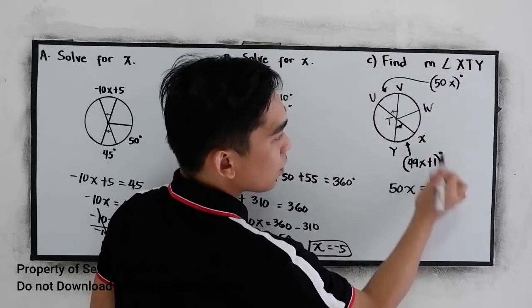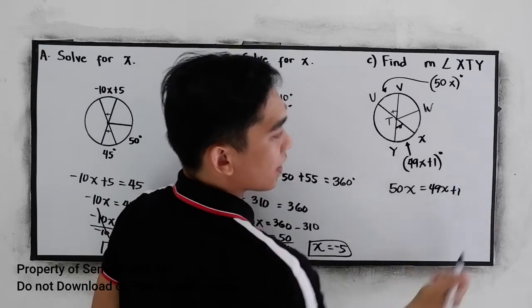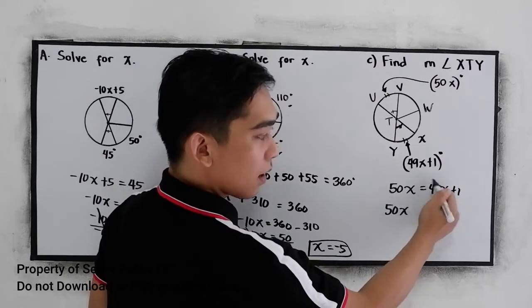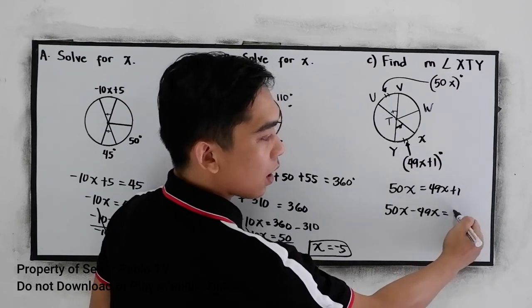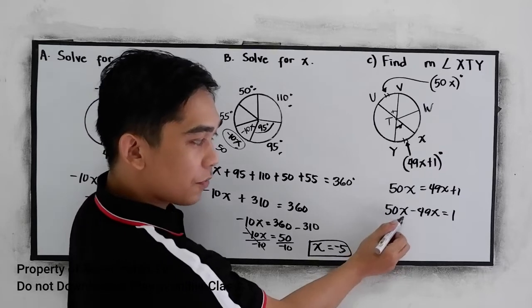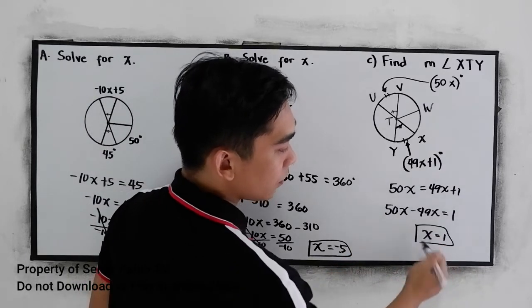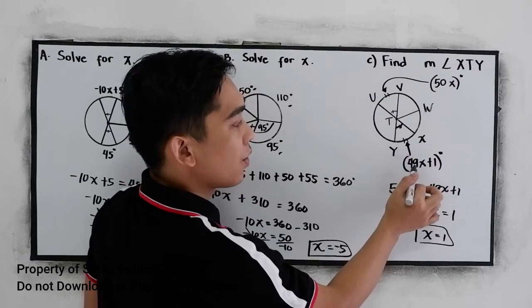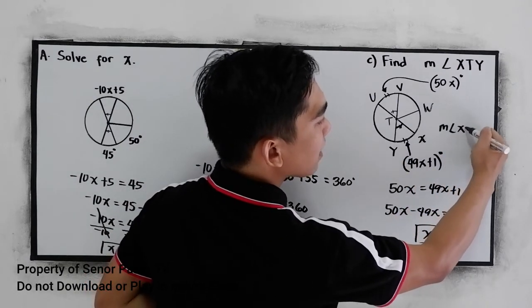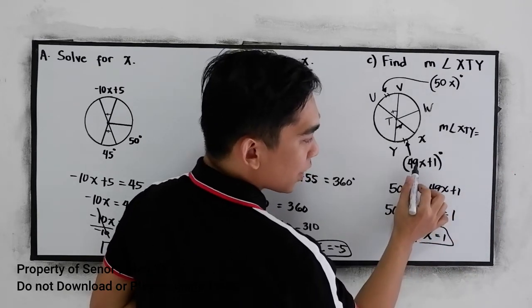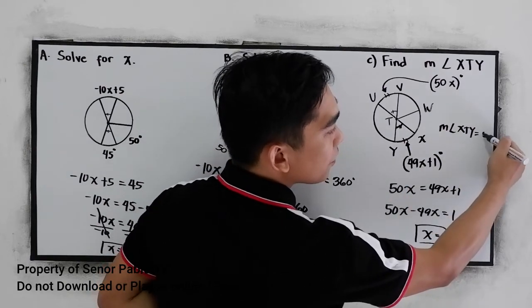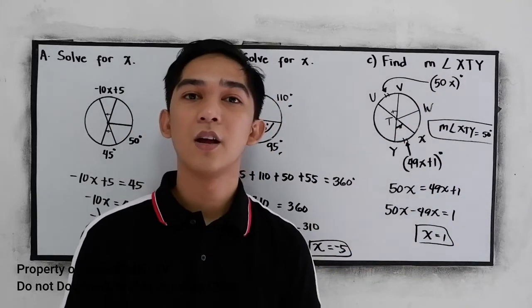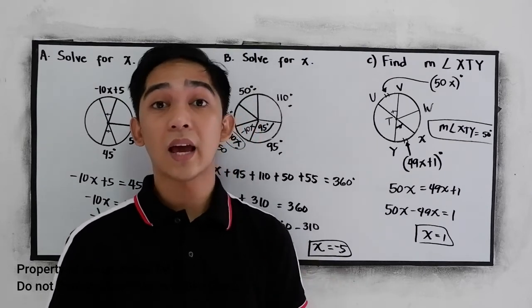This arc is equal to this arc. Now, 50X minus 49X is equal to 1, so X is equal to 1. Since we have a value for X, let us substitute into our minor arc. The measure of angle XTY is equal to 49 times 1 plus 1, which is 50 degrees. That is the application of our central angle and arcs.